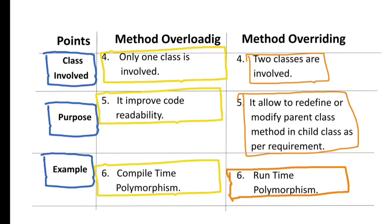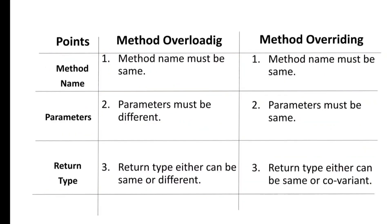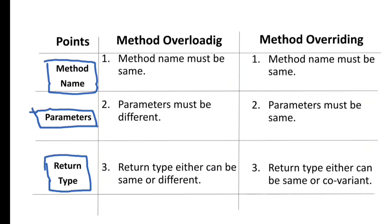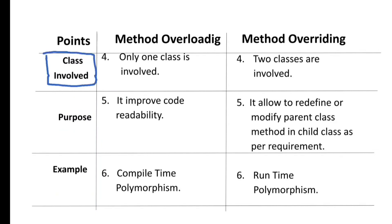If you want to memorize all these differences quickly, go through them sequentially: first compare the method name, then the parameters, then the return type, then the classes involved, then the purpose, and finally the type of polymorphism — whether it is compile-time or runtime polymorphism.